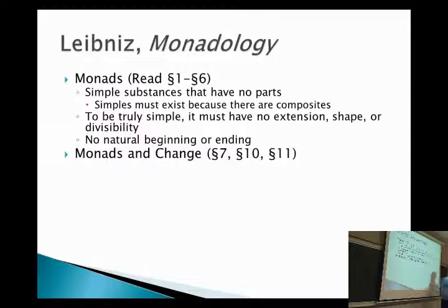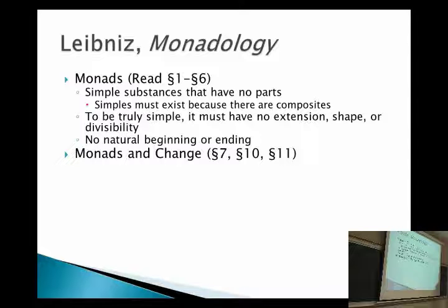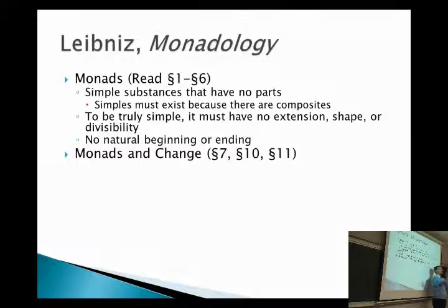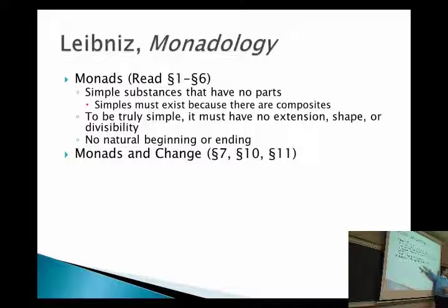What is he saying about monads? One of the weird things is that monads have no windows. It's like one simple single unity — you can't change it from the outside. Since it has no parts within it, you can't move the parts around. It can't exchange things with other monads, can't receive anything into it, and can't send anything out of it. So when it comes to change, it's impossible for there to be any change from the outside. But does that mean it's impossible for there to be any change in the monad at all?